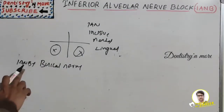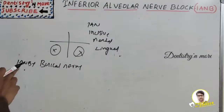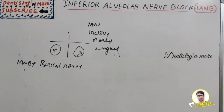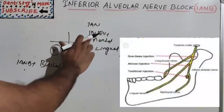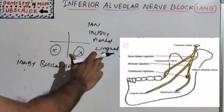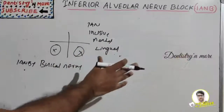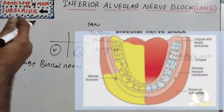A buccal nerve block will sometimes also be given along with IANB, only if soft tissue anesthesia in the buccal posterior region for that quadrant is necessary. The nerves anesthetized are the inferior alveolar nerve, incisive nerve, mental nerve, and lingual nerve.